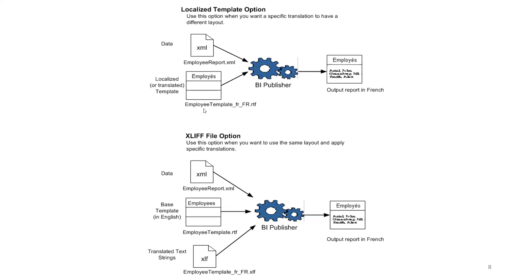In the multiple-template approach, your data model XML goes through a French RTF template in BI Publisher and you get French output directly. In the XLIFF approach, your XML data model goes through an English template, translation is applied during generation using the XLIFF file, and you get the French output. The key difference is: one uses a separate French template selected by locale, while the other uses a base English template with translation strings in the XLIFF file selected at runtime by BI Publisher.